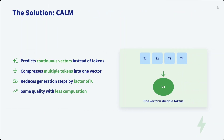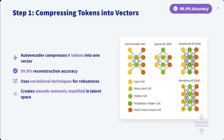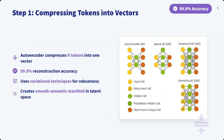What is the solution? CALM. Instead of predicting tokens, we should now start predicting continuous vectors. This continuous vector is a combination of multiple tokens — you are compressing multiple tokens into one vector, then making the LLM predict another vector. This reduces generation steps by a factor of k, achieving the same quality with less computation, where k equals the number of tokens combined into one vector.